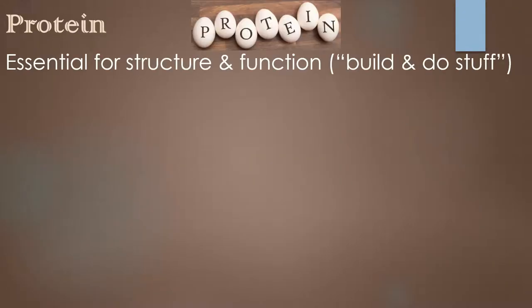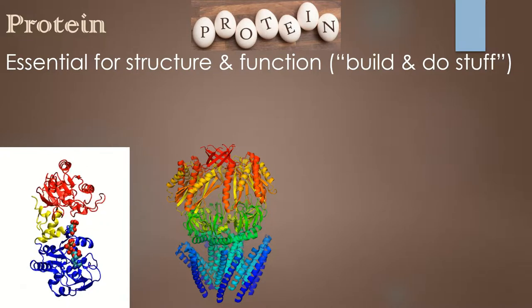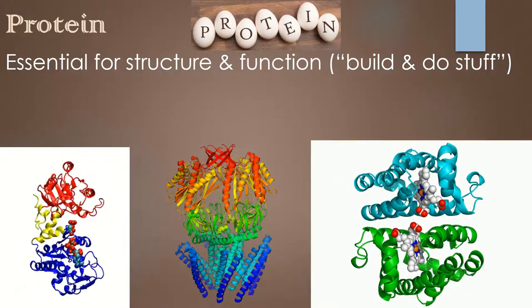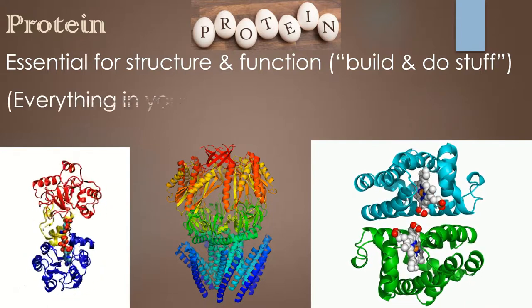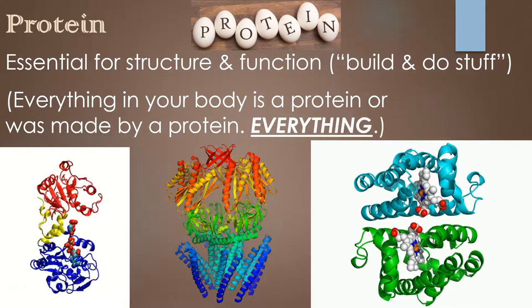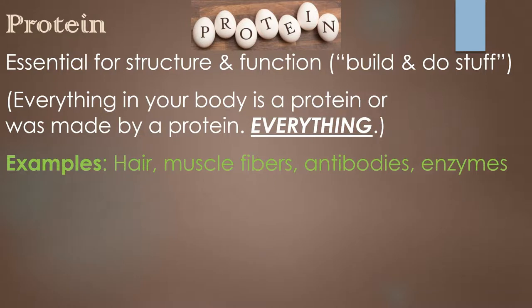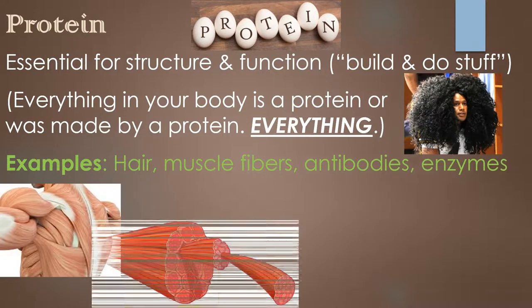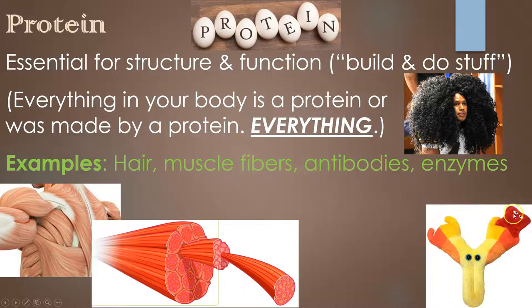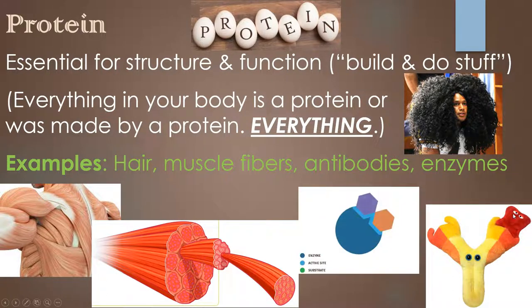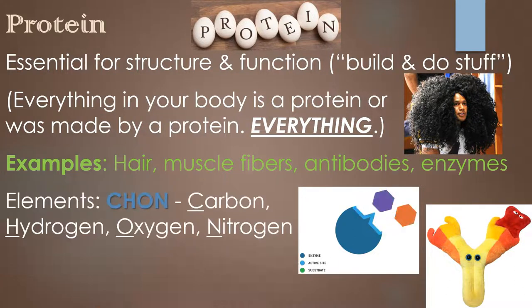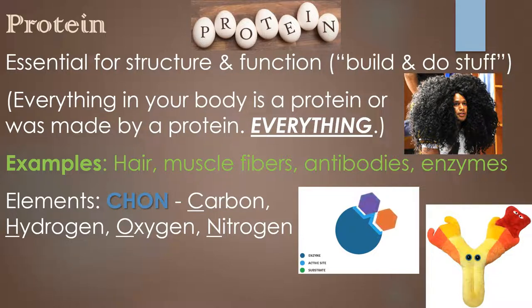Finally, protein. It's essential for structure and function — it builds things and does things in the body. Everything in your body is a protein or was made by a protein. Examples of protein include hair, muscle fibers, antibodies that bind to pathogens trying to make you sick, and enzymes, which we'll spend more time on soon. The elements in protein are CHON: carbon, hydrogen, oxygen, and nitrogen. All macromolecules share CHO, but protein adds nitrogen on top of that.